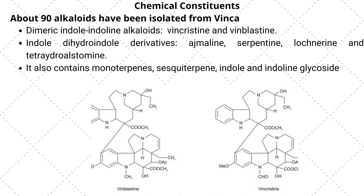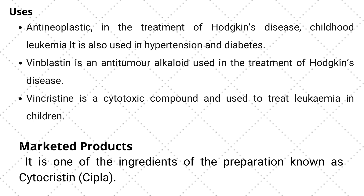The active principle in Vinca is a dimeric indole-indoline alkaloid, where both indole and indoline moieties are present. The alkaloids are vincristine and vinblastine — these were the first isolated alkaloids used for the treatment of cancer. Another group is the indole-dihydroindole derivative, which includes ajmaline and serpentine. Other active principles include glycosides (indole-glycoside and indoline-glycoside), monoterpenes and sesquiterpenes. Vinblastine is used for the treatment of Hodgkin's disease, and vincristine is used for the treatment of leukemia. Vinca is also used for the treatment of diabetes. The marketed product brand name is 'Cytocristin' by the company Simpla.